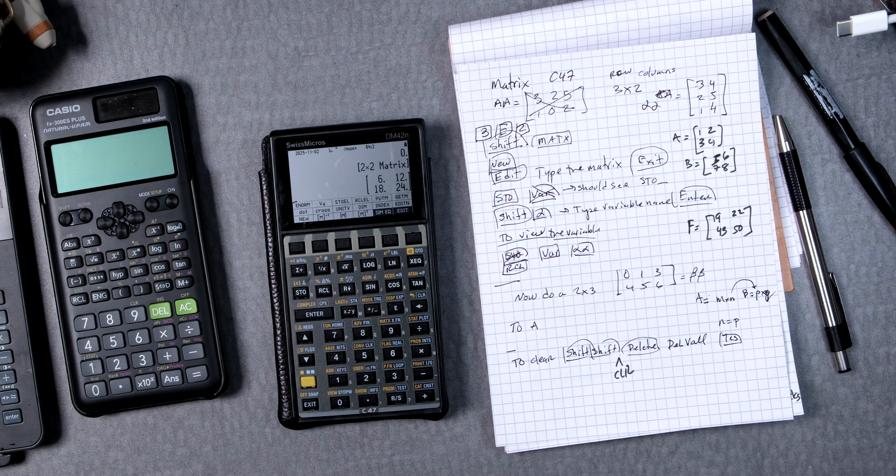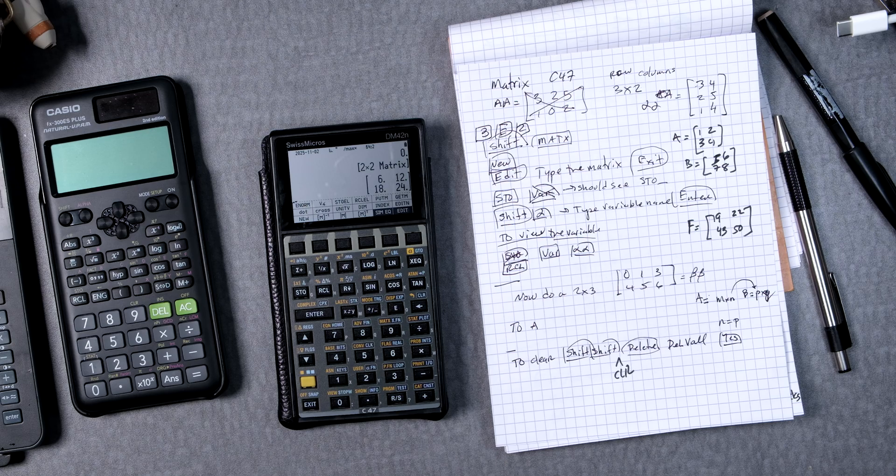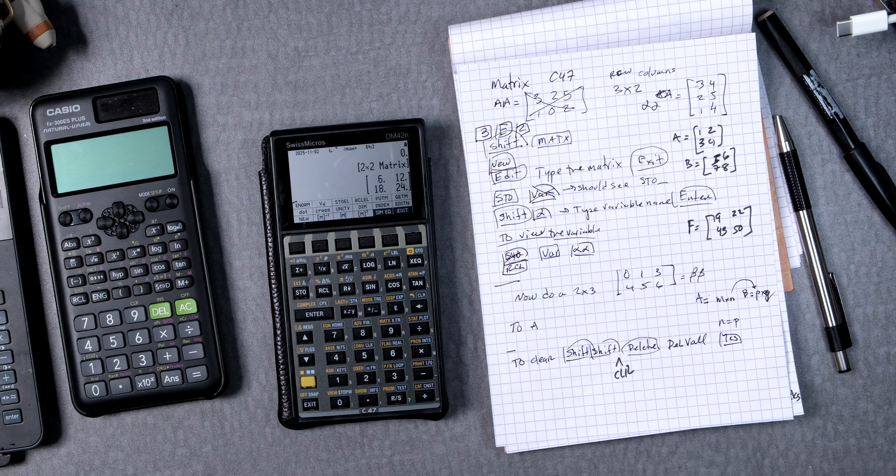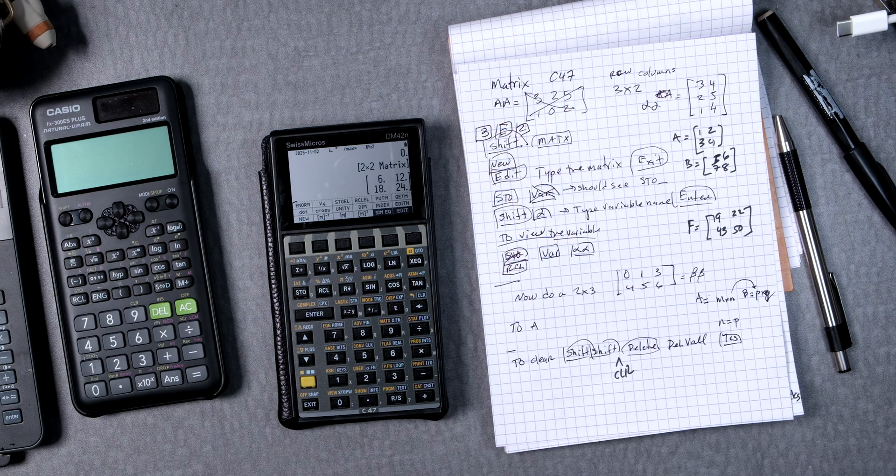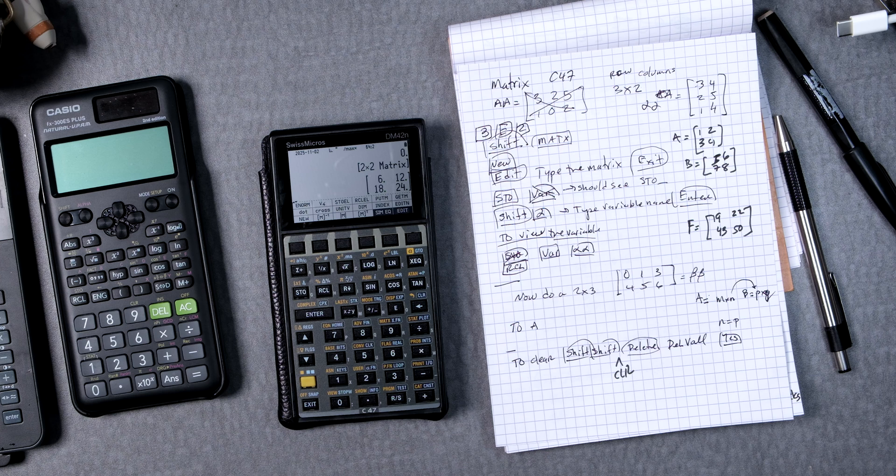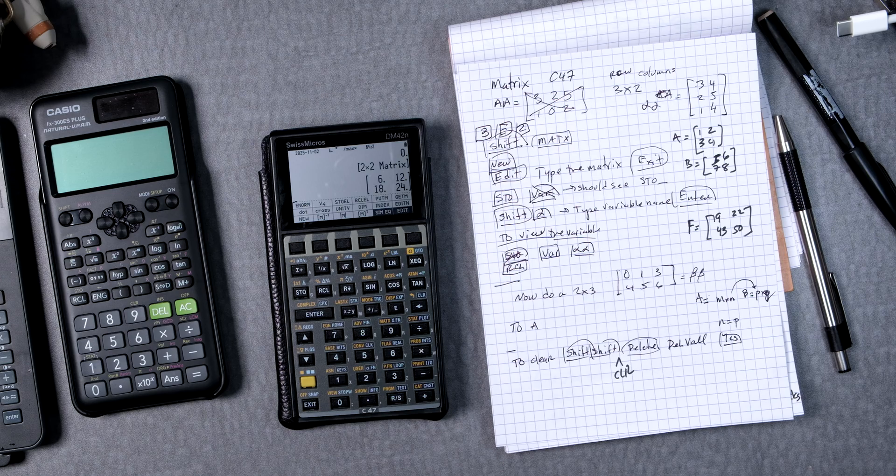I hope that was interesting and informative. This is for multiplying. You can also do adding and other types of matrix operations. But that should get you started using the C47 software that is installed on the Swiss Micros DM42N. There is a DM42 that you can also run the software as well. I hope you have a great semester. I hope you like this video. Please share it with your friends, on a playlist, or with your teacher.